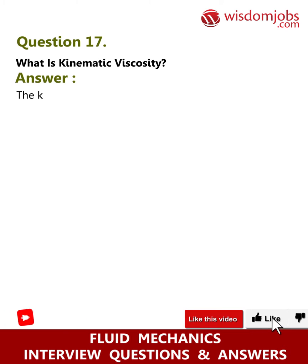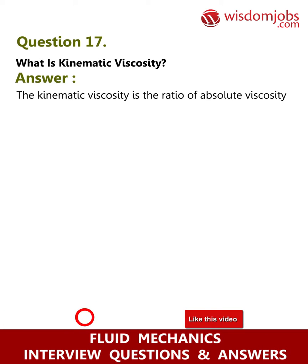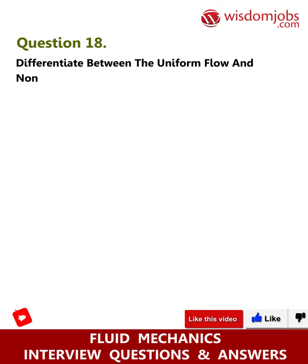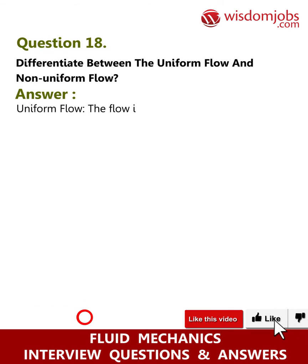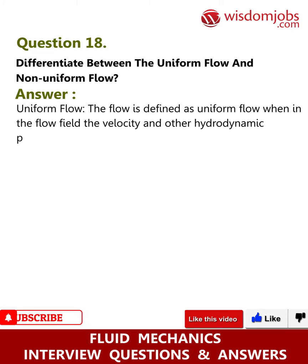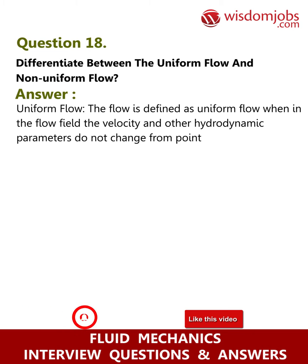Question 17: What is kinematic viscosity? Answer: Kinematic viscosity is the ratio of absolute viscosity to the density of the liquid. Question 18: Differentiate between uniform flow and non-uniform flow. Answer: Uniform flow is defined as flow where, in the flow field, the velocity and other hydrodynamic parameters do not change from point to point at any instant of time.